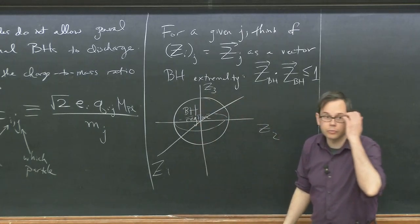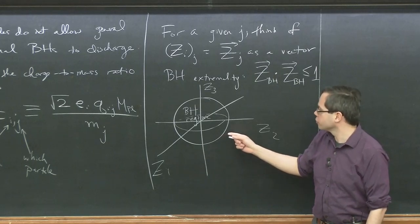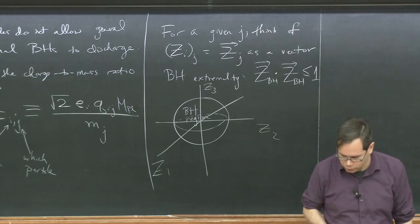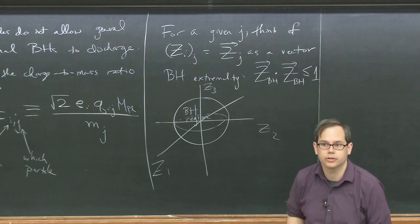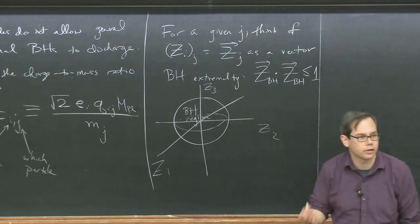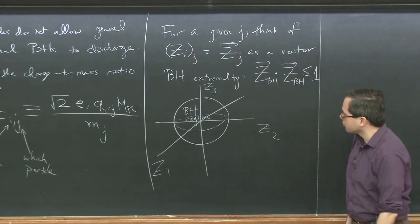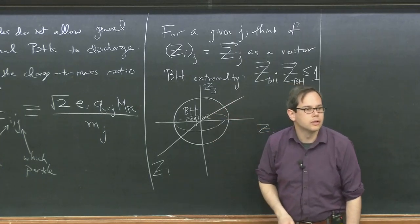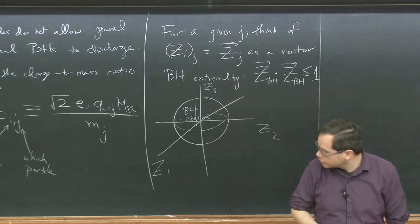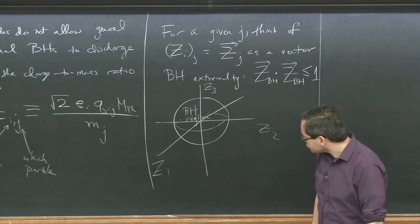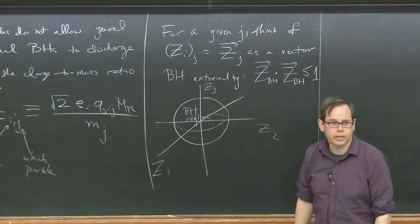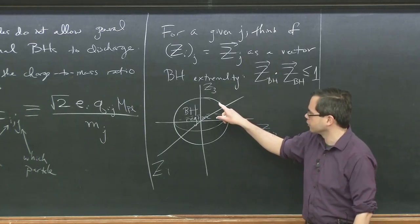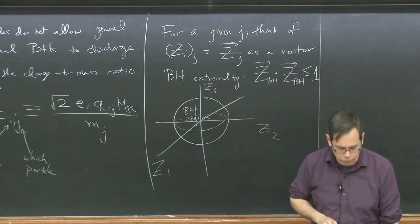Extremal black holes would live on the boundary of this region if we compute using the two-derivative action. If you have higher-dimension operators, the black holes could move slightly outside or slightly inside this region, unless there's other physics like a BPS bound from supersymmetry that forces them to live exactly on the boundary.